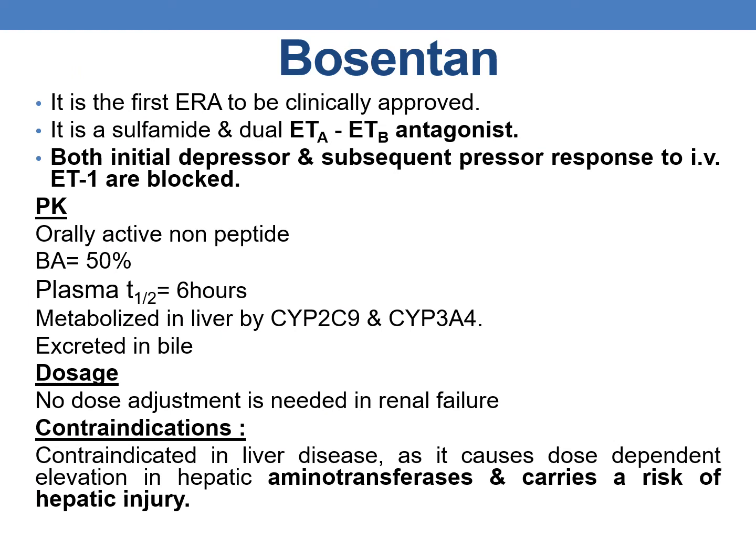Bosentan is the first endothelin receptor antagonist to be clinically approved. It is a sulfonamide and dual ETA and ETB antagonist. Both initial depressor and subsequent pressor responses to IV ET1 are blocked by bosentan. Pharmacokinetics: orally active non-peptide; bioavailability 50%; plasma T-half 6 hours; metabolized in liver by CYP2C9 and CYP3A4; excreted in bile. No dose adjustment is needed in renal failure, but bosentan is contraindicated in liver disease because it causes dose-dependent elevation in hepatic aminotransferases, carrying a risk of hepatic injury.